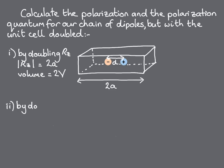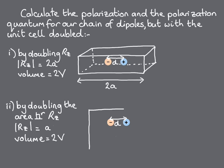And second, where the unit cell doubling is achieved by doubling the area perpendicular to the direction of the dipole, but the lattice vector in the direction of the dipole is unchanged. In this case, R sub Z is still equal to A, but again the volume is 2V.